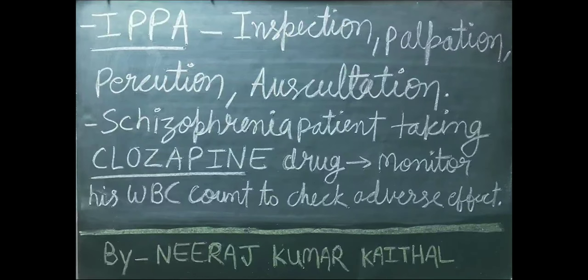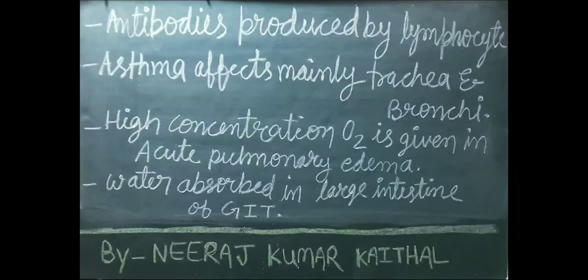Antibodies are produced by lymphocytes. Antibodies ka nirman lymphocytes dwara kiya jaata hai. Asthma affects mainly the trachea and bronchi. Asthma condition mein trachea aur bronchi hi effect hoti hain.